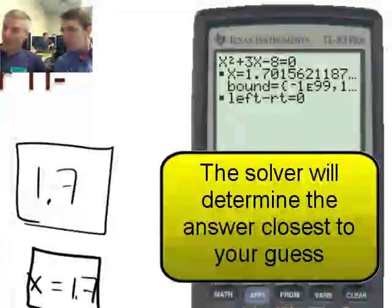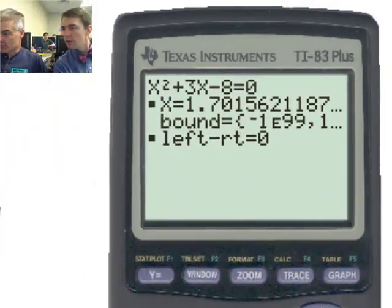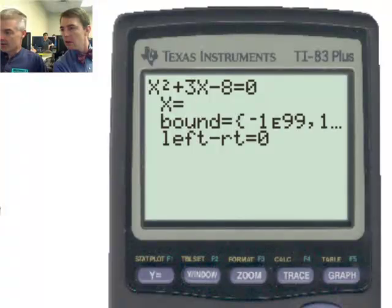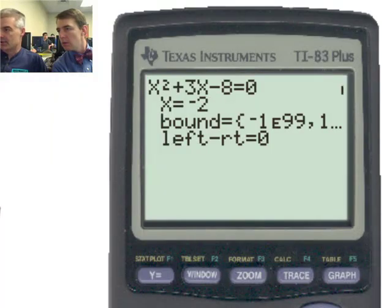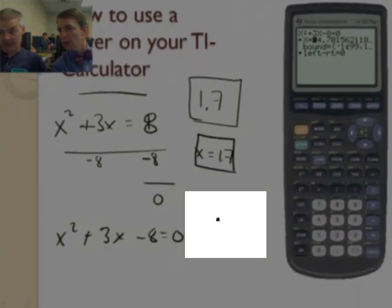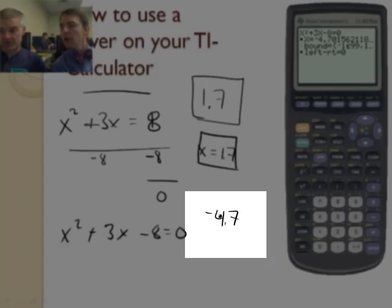So can we guess negative 2 and see what it gives us? Well, yeah. Let's try negative 2. Don't forget, there's a difference between negative 2 and 2. So hit the negative sign and then 2. Alpha solve. My other answer is negative 4.7. So negative 4.7 is the other answer.